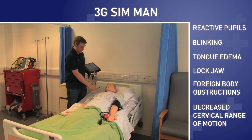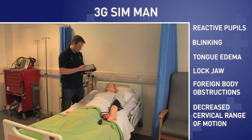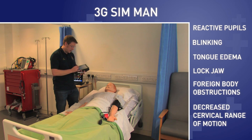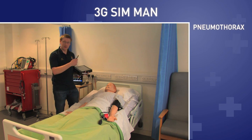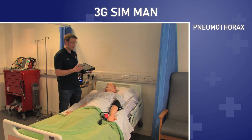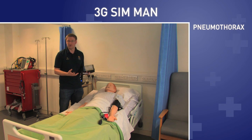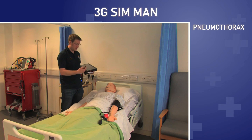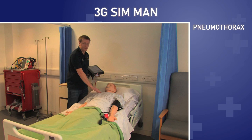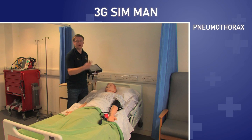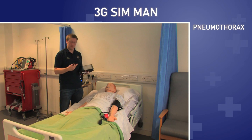Going down to his lungs, we can give him a pneumothorax on either side, which means basically a collapsed lung. So you can put a needle through his chest to decompress the lung and make him breathe properly.